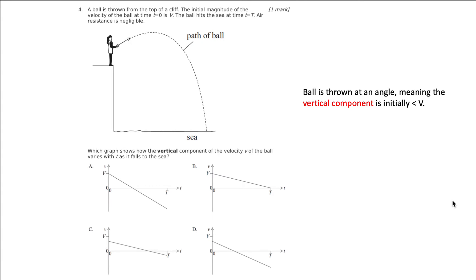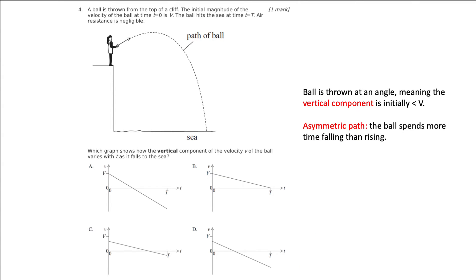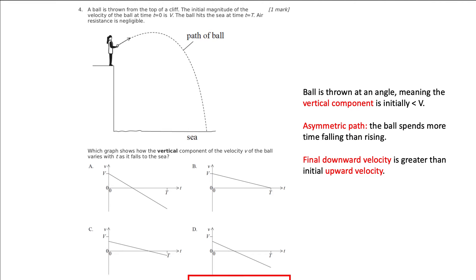We then need to think about the shape of these graphs. In C, we spend more time going up than going down; in D, we spend more time going down than up. Well, looking at the picture, it's clearly asymmetric — we're going to spend more time going down than going up. We have an asymmetric path, meaning the ball spends more time falling than rising, and our final downward velocity is greater than our initial upward velocity. That's why the answer here is D.